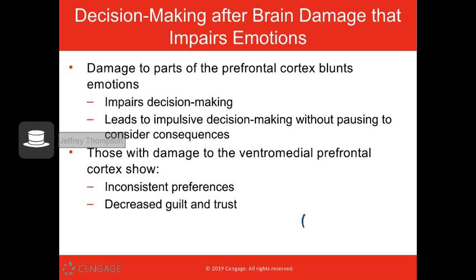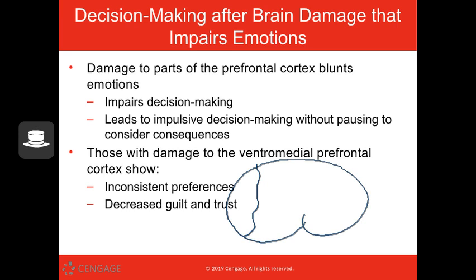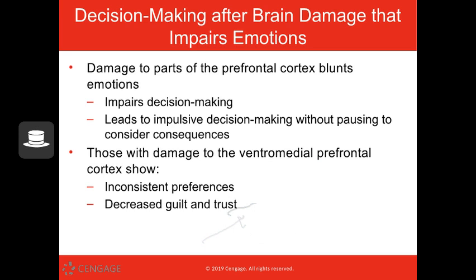Damage to the prefrontal cortex is going to blunt our emotions, making it harder for us to make decisions and leading to more impulsive decisions. Usually, we have a moment of 'this person said something mean, I really want to punch them but I won't' — we go through options before just jumping into punching people. If there is damage to the ventromedial prefrontal cortex specifically, you might see inconsistent preferences, inconsistent decision-making, and decreased guilt and/or trust.